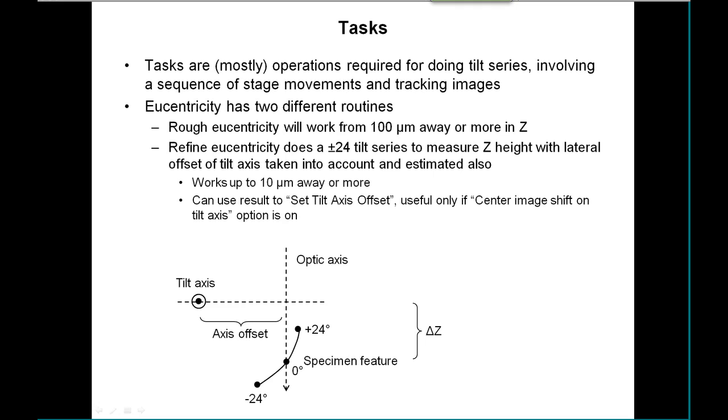One of the most important ones you'll find is the eucentricity tasks. This actually has two different routines. The rough eucentricity uses very small increments so that it doesn't get lost, and it can work from a hundred microns or more away. So basically you can stick your rod in and run your rough eucentricity, and it'll be able to handle just about anything.